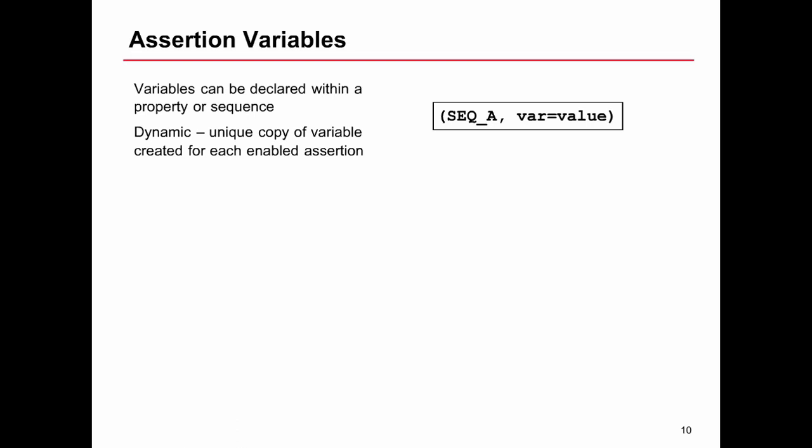We're not talking about different instances of a property, we're talking about the same property instance but it could have multiple copies being evaluated at the same time due to overlapping. Each one of those overlapping copies has its own value for its unique variable. Unless we pass that variable out via the parameters of a property, there is no way that can be seen externally.